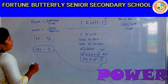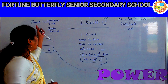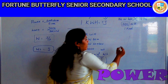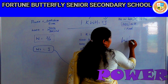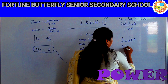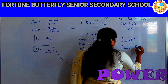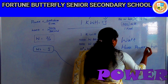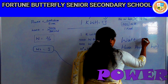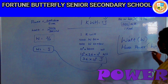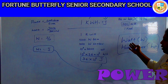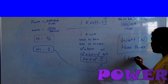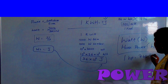There is one more unit for power, which is horsepower, usually represented as HP. So power can be measured in two units: Watt and horsepower. The SI unit of power is Watt, but 1 horsepower is equal to 746 Watts.